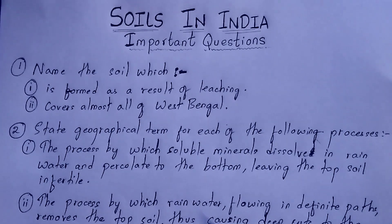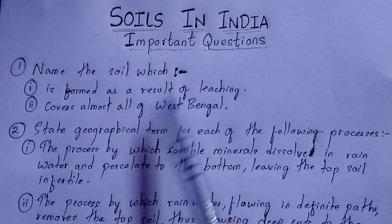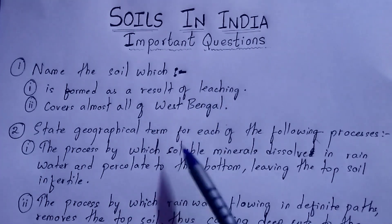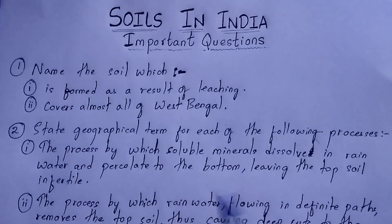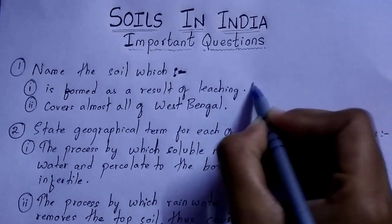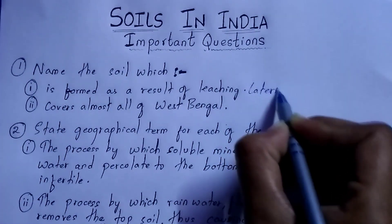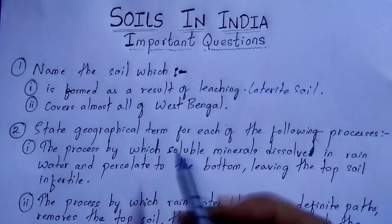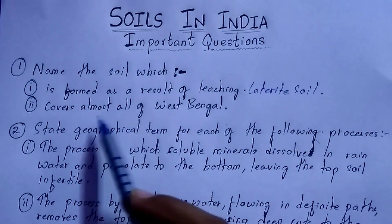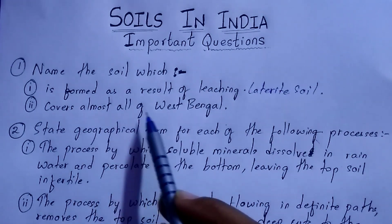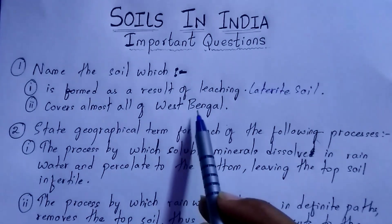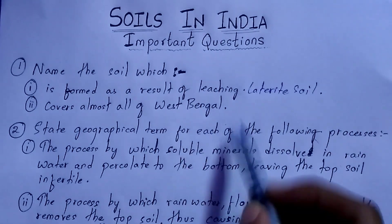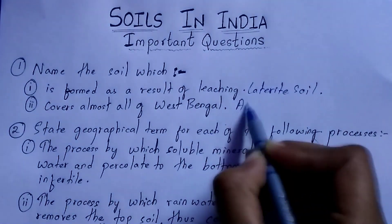The first question: name the soil which is formed as a result of leaching. The soil formed as a result of leaching is laterite soil — it is laterite soil. The next question: name the soil which covers almost all of West Bengal. The soil that covers almost all of West Bengal is alluvial soil.